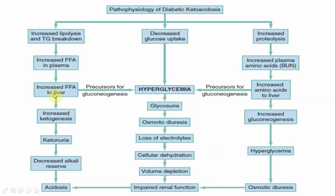Free fatty acids undergo beta-oxidation, giving rise to ketones: acetone, acetoacetic acid, and beta-hydroxybutyric acid. These can appear in the urine and can also be checked in the serum. The ketoacids — acetoacetic acid and beta-hydroxybutyric acid — add up to the acidosis, and renal impairment further worsens the metabolic acidosis. Amino acids from protein breakdown contribute to gluconeogenesis, raising sugar levels further and adding to the osmotic burden.